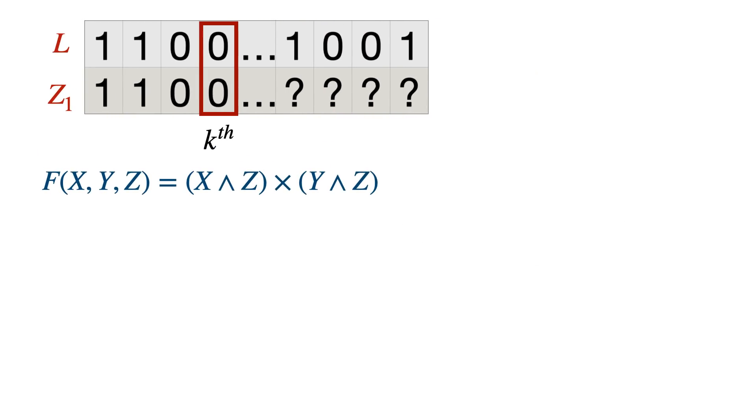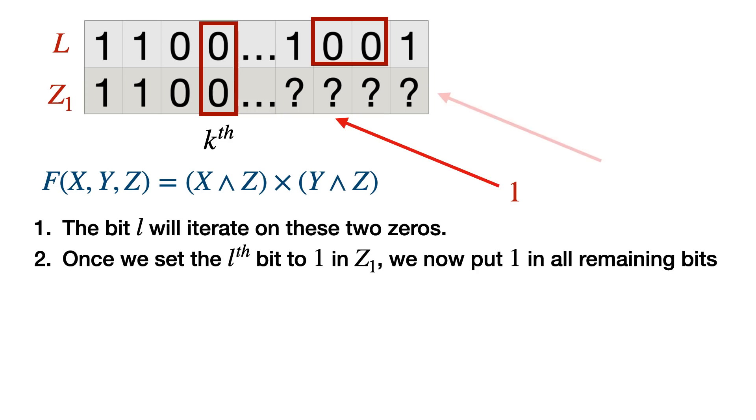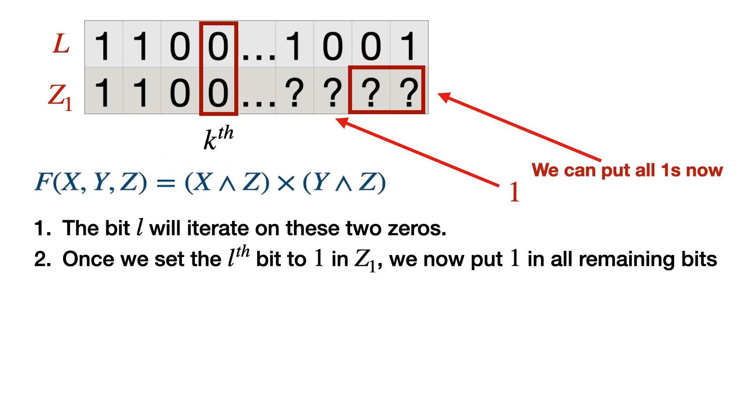Walking through an example, this is what we are doing. We are having these two bits where L is having a zero, so L is going to iterate on that. In each iteration, we set that corresponding bit to one. In all the remaining bit positions, we can put one because I'm focusing on maximizing our function F(X,Y,Z). Whenever I put one in Z, it helps both X and Y to receive a one in the resultant bit as well. I'm putting ones in Z so that it helps both X and Y to stay at the maximum value.